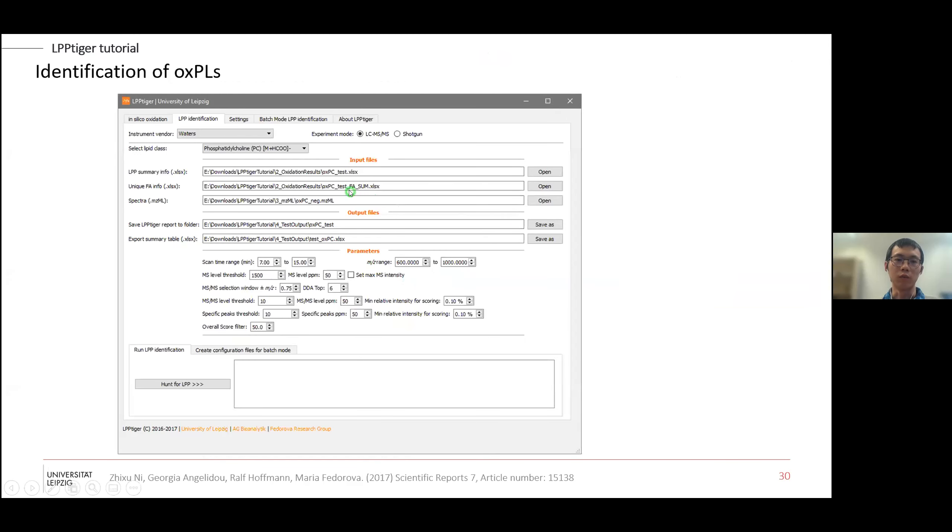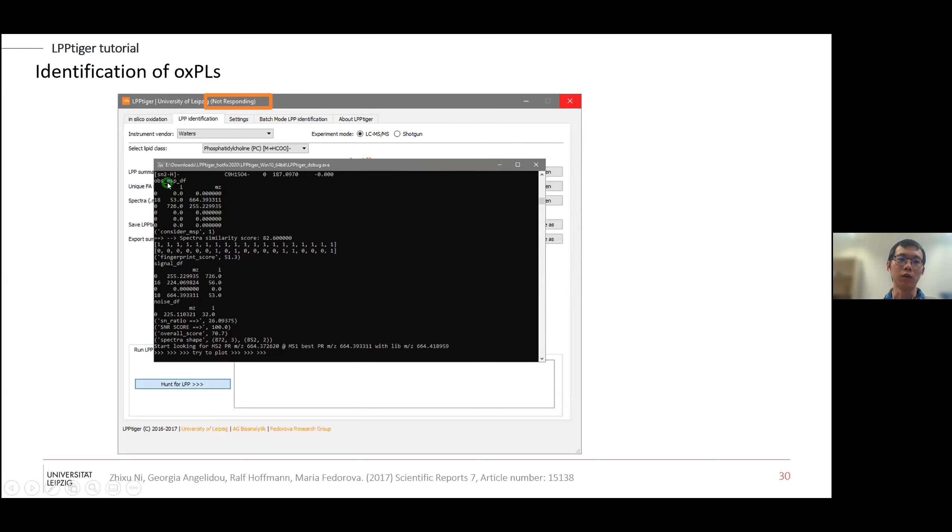Then you can start the software. You select this tutorial file from the vortex, you select LCMS and the phosphatidylcholines. You select these two Excels and the MZML file. Then you select where to save this output and the Excel summary type. There are some general parameters about the retention time range, m/z, PPMs and certain thresholds. Then you can click here just to start for the oxidized lipids. The software might not respond because the time of processing is very long. But if you are running the debug mode, you can see the software is trying to find something, already matching something, get some score or generating the images.